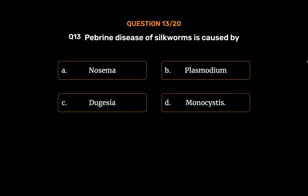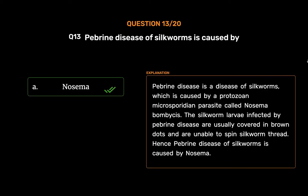The correct answer is Option A: Nosema. Pebrine disease is a disease of silkworms caused by a protozoan microsporidium parasite called Nosema bombicis. The silkworm larvae infected by pebrine disease are usually covered in brown dots and are unable to spin silkworm thread. Hence, pebrine disease of silkworms is caused by Nosema.